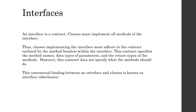The contract specifies the method names, the data types of parameters, and the return types of the methods, but it does not specify what the methods should actually do — it says nothing about implementation details, just what the inputs and outputs are. Overall, this contractual binding between an interface and classes is known as interface inheritance, a very particular kind of inheritance specific to interfaces.